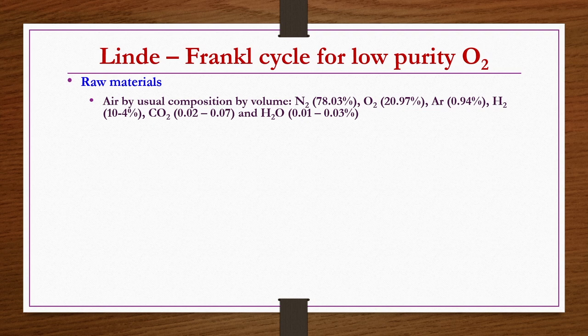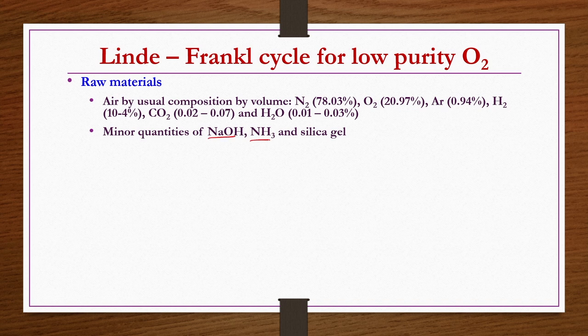Natural air is taken as raw material. Minor quantities of sodium hydroxide, ammonia and silica gel are also used for purification — specifically for removing CO2 and H2O. These chemicals are required in minor quantities only.